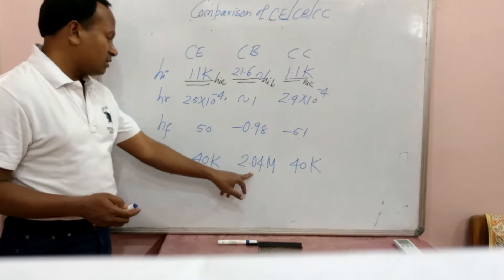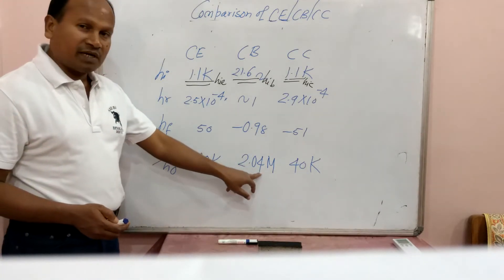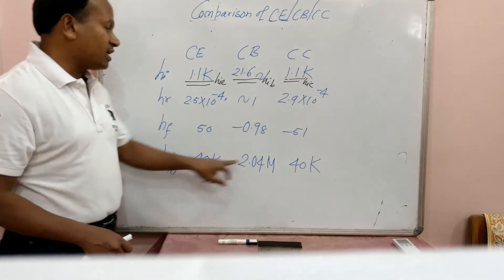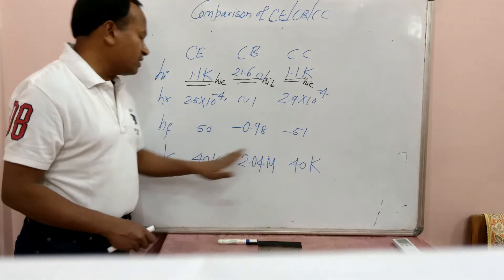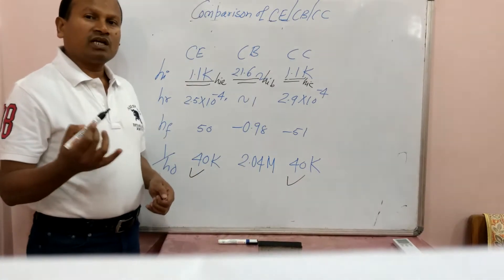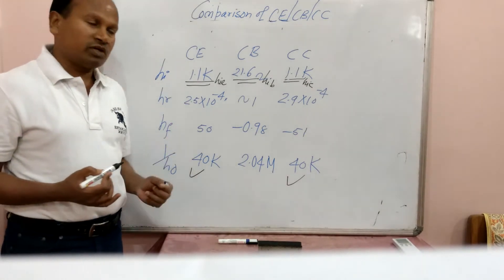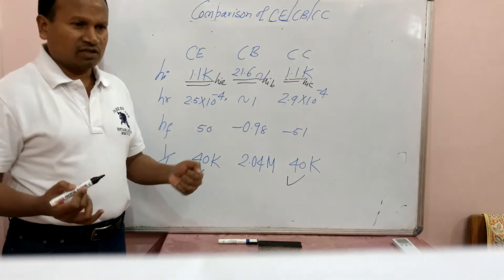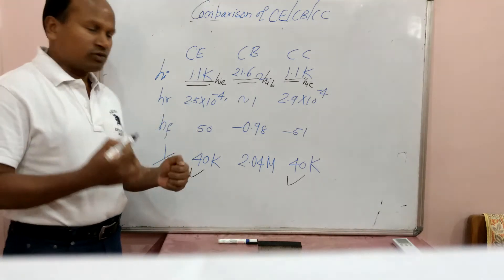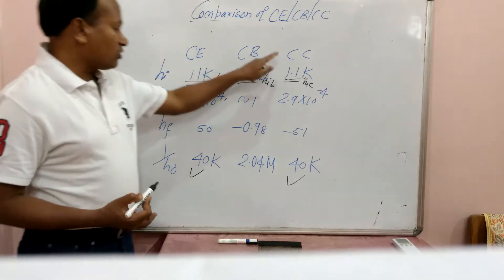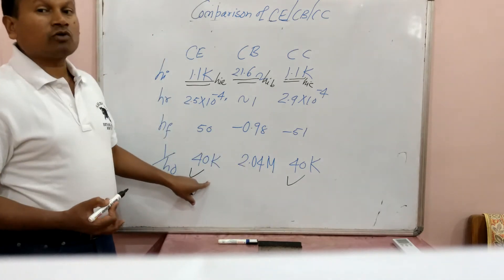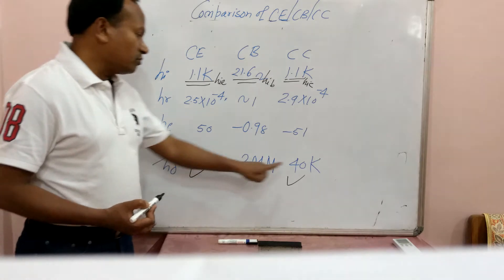Regarding output resistance: 1 upon HO gives output impedance. For common base it is 2.04 MΩ, which is the highest among the three configurations. For common emitter and common collector the output impedance is almost the same — both give 40 kΩ. In common collector the output current is emitter current, and in common emitter it is collector current. Since 98% of emitter current is generally collector current, the output resistance for common emitter and common collector is almost the same — HOe and HOc are both 25 µA/V, giving reciprocal values of 40 kΩ each.